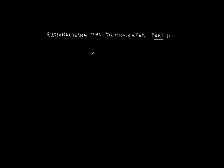Rationalizing the Denominator Part 1. If I'm given a fraction, say, a over the square root of b, the first thing I should notice is that in the denominator there's a square root — the square root of b. We do not want the square root of b in the denominator. In fact, we do not want any square roots in denominators.